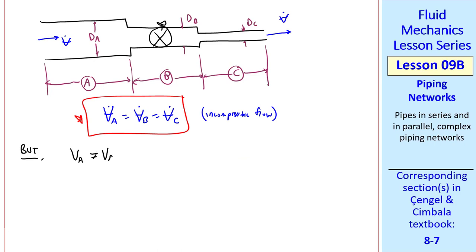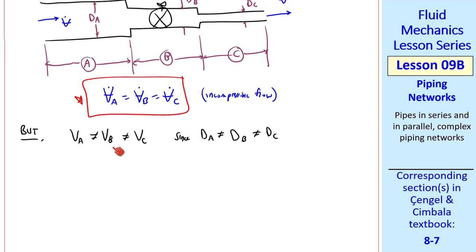But average speed VA is not equal to average speed VB or average speed VC, since the pipe diameters are not the same. If neither average speeds nor diameters are the same, even though it's the same fluid with the same density and viscosity, this means that Reynolds number also differs between the three pipes, and likewise relative roughness is not the same.